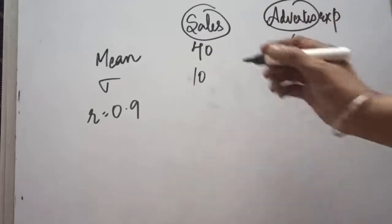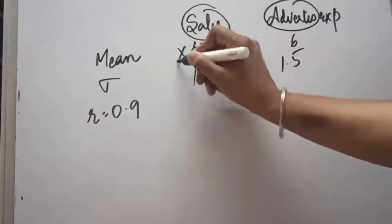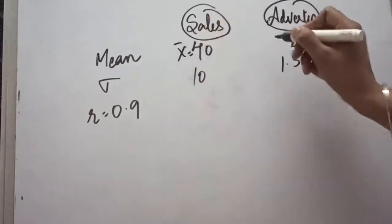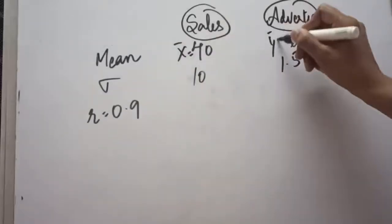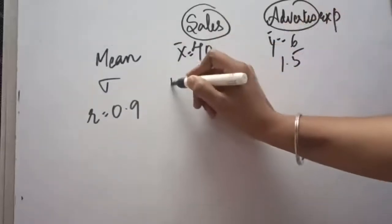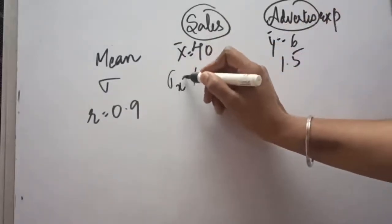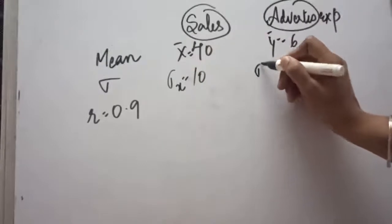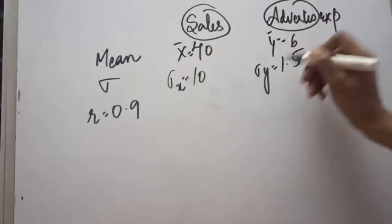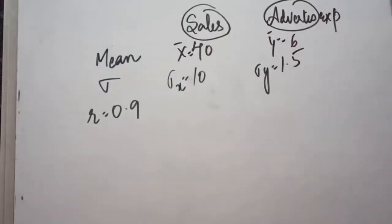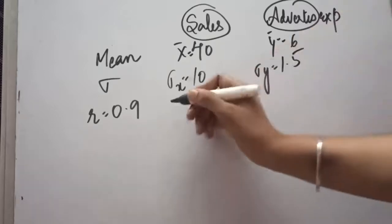We can say that x mean is 40, y mean is 6, standard deviation of x is 10, and standard deviation of y is 1.5. In this question, we have been told to calculate both the regression equations.